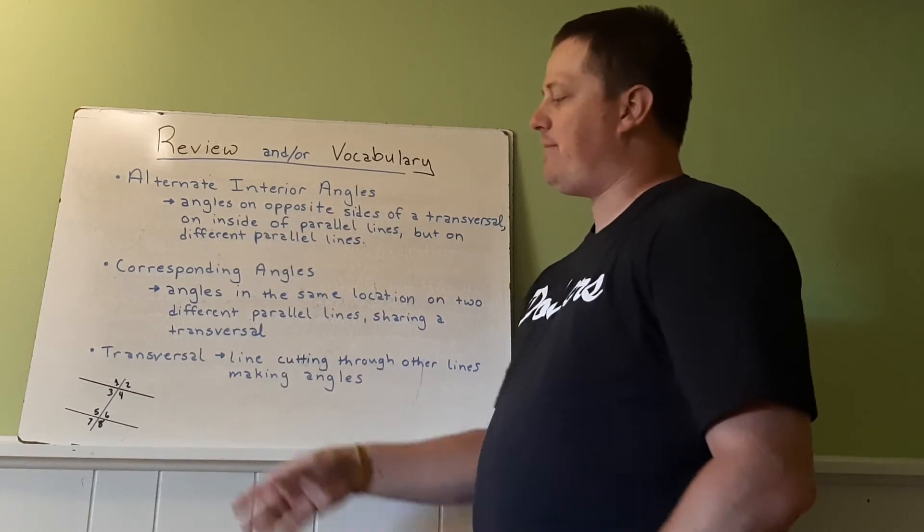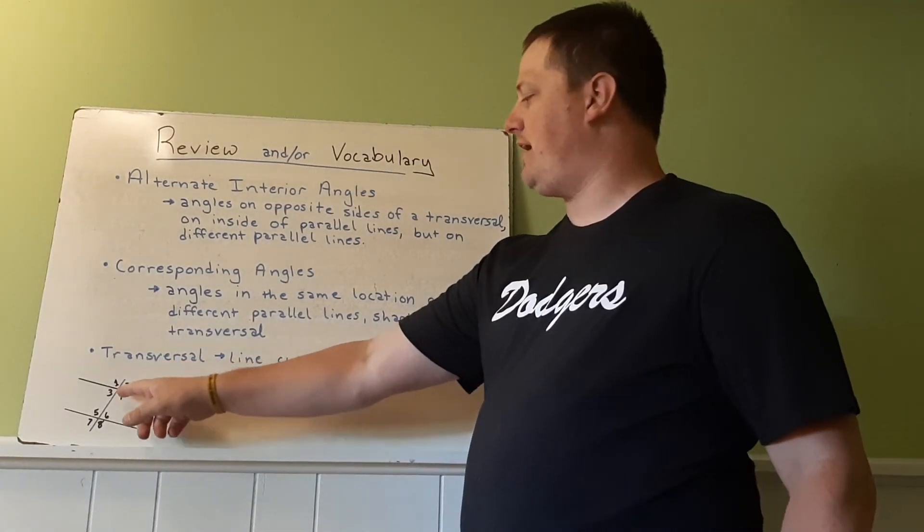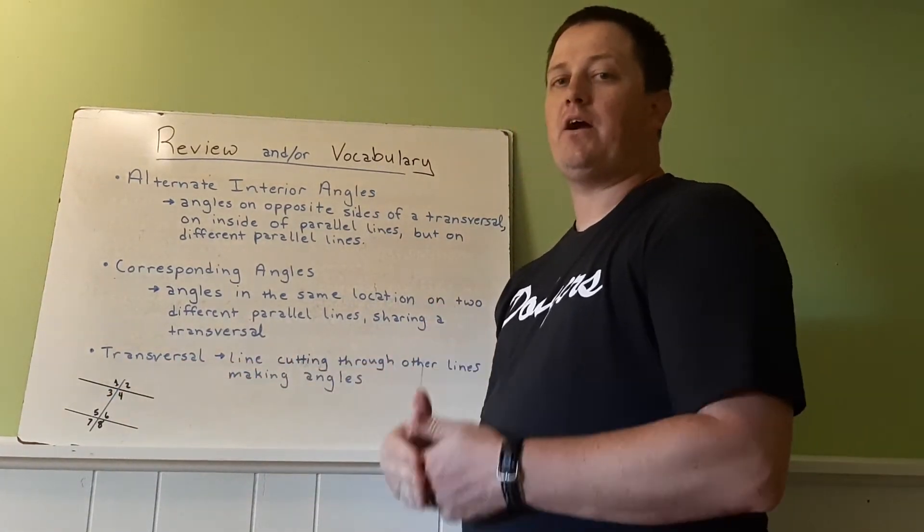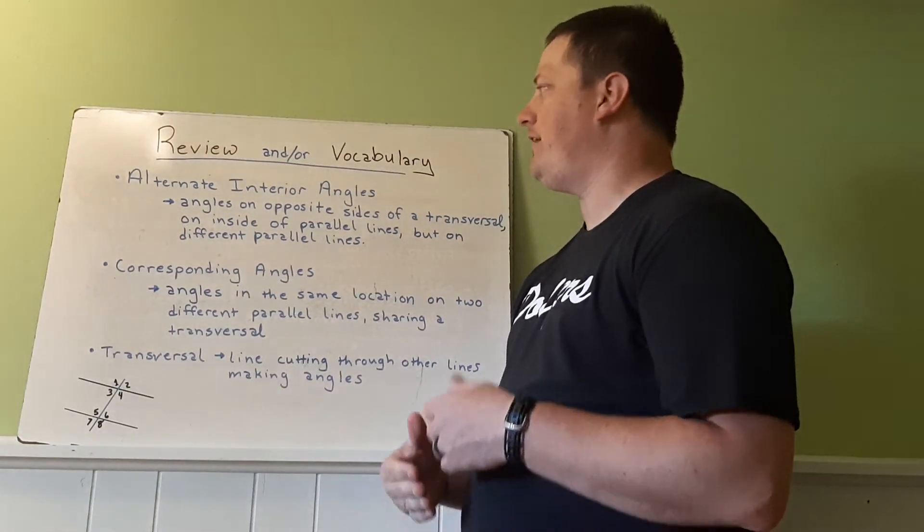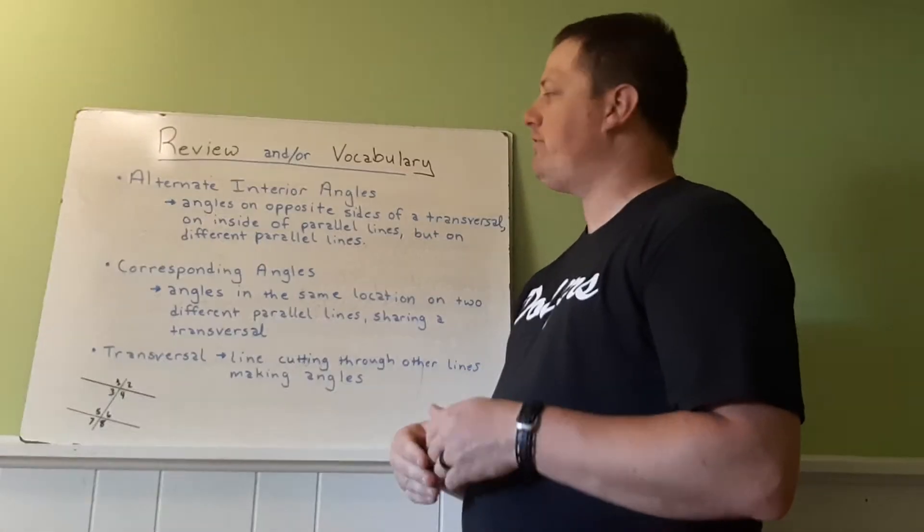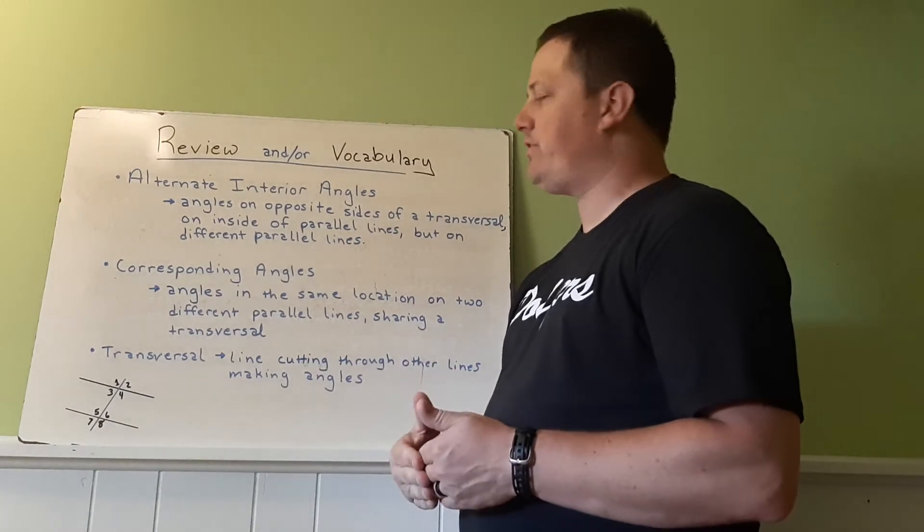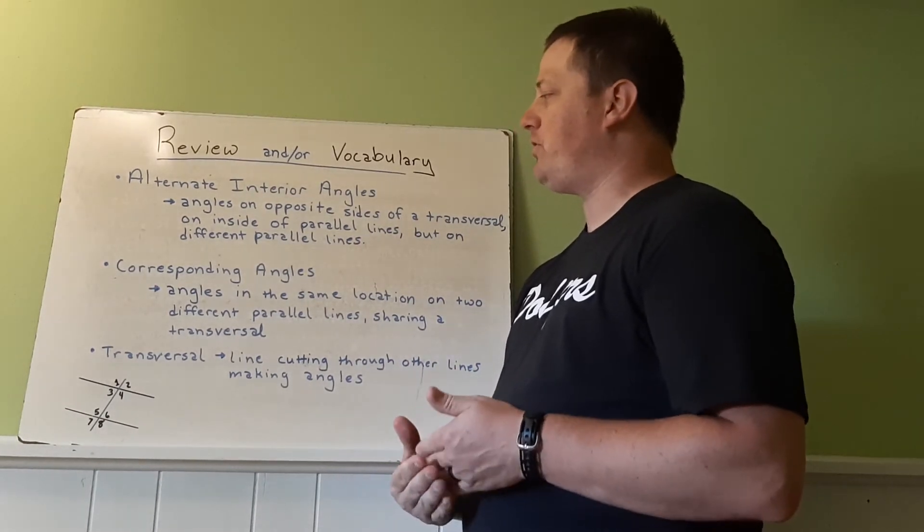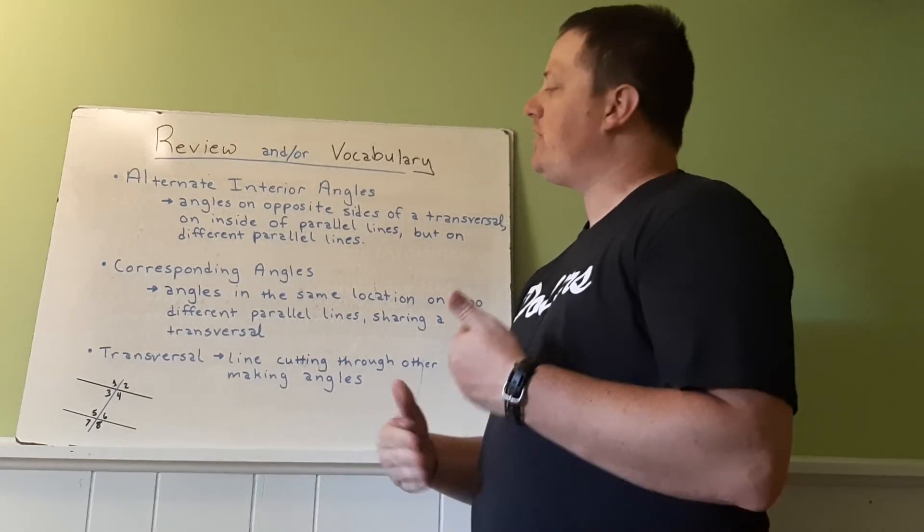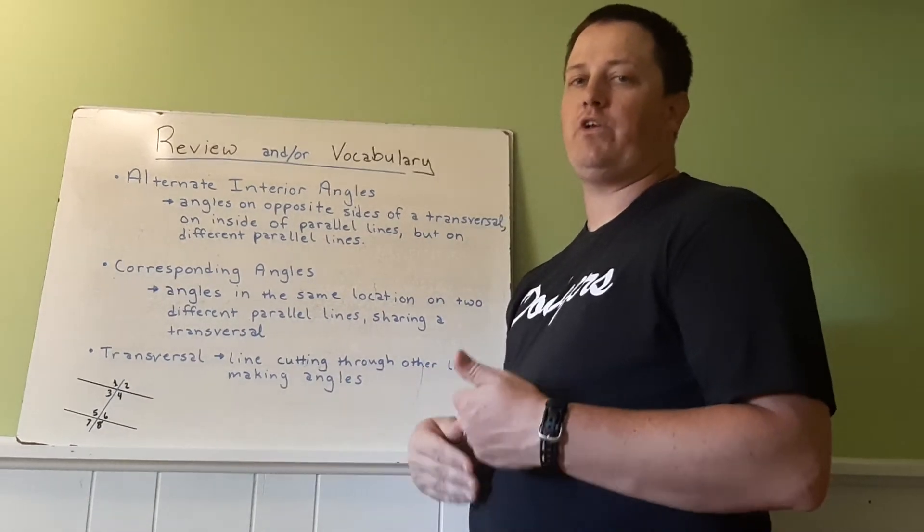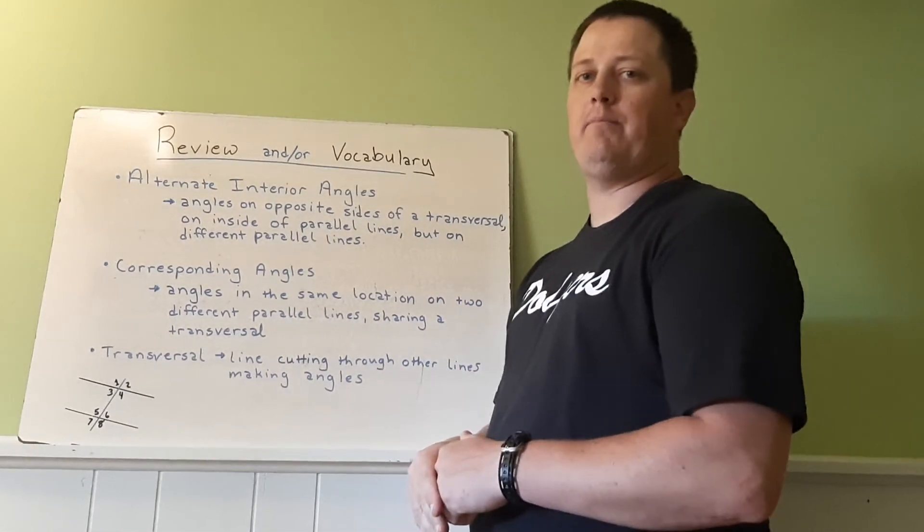So one thing to think about is I showed you two and six, I showed you four and five, but there are multiple pairs of alternate interior angles in parallels with transversals, and there's multiple corresponding angles. So your job is to try and figure out which ones are which and how to prove them to be equal.